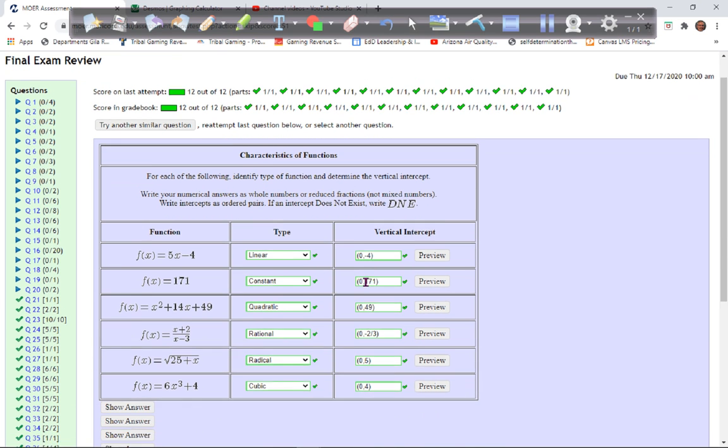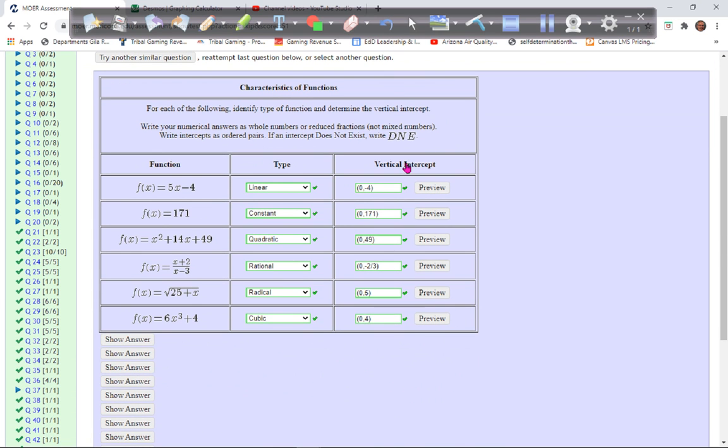So be able to find the vertical intercept and identify the type. Linear is just x to the first power or x with no power. Constant, there is no x variable, it's just a function equals a number. Quadratics have x squared, cubics have x cubed, radicals have a radical, and rationals are fractions.